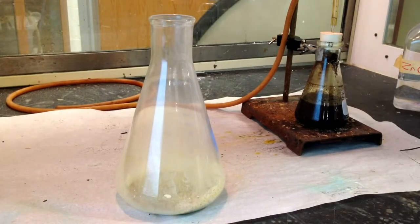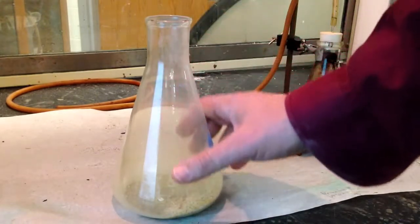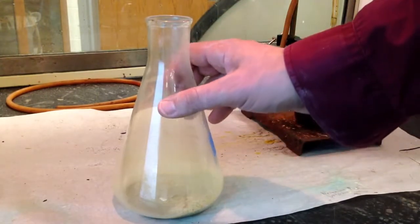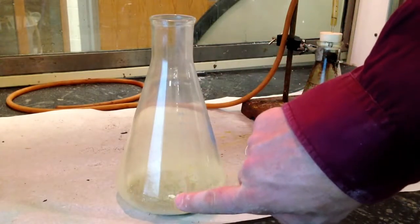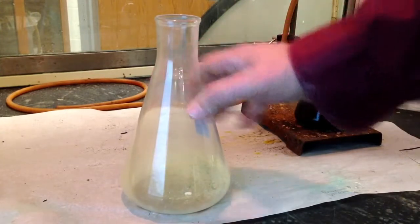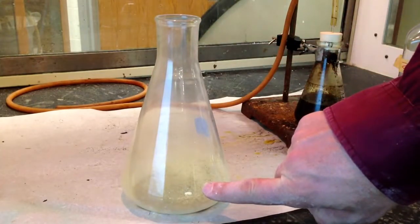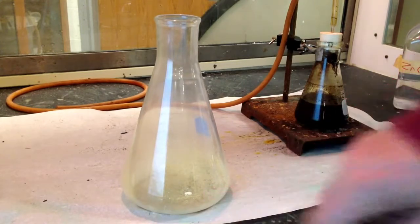So once the dust has settled, so to speak, we're left with an Erlenmeyer flask that's kind of milky white on the outside. That's where the sodium chloride dust has settled. But if you look very carefully, you'll see a white spot. That white spot, and I'll get a close-up in a second, represents where the sodium was in highest concentration. And that is where you see some solid sodium chloride crystals.